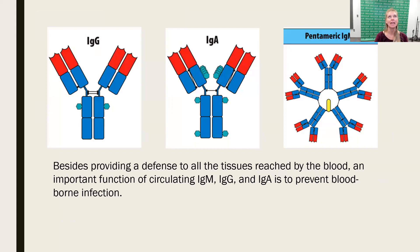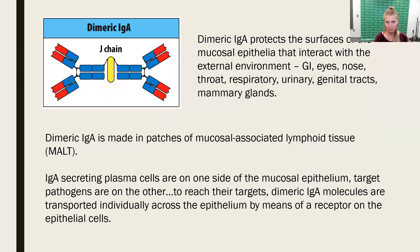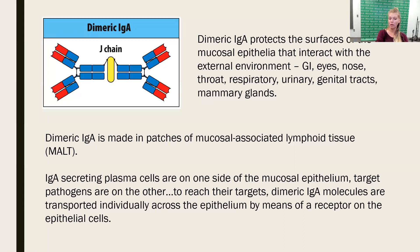IgG can bind pathogens floating around in circulation and prevent them from interacting with tissue — that's how infections are prevented from going septic throughout the entire body. IgA is secreted in dimeric form at mucosal surfaces: the gut, upper respiratory tract, upper GI tract, nose, genital tract, urinary tract, and mammary glands. All of those secretions tend to have a lot of dimeric IgA.